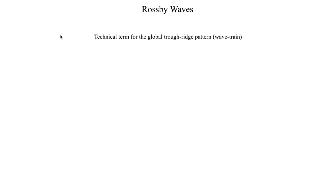There are multiple different categories of Rossby wave that we can look at, but here we're going to focus on the main two. So first, let's start off with the definition of a Rossby wave. This is usually a term that people will use to refer to the troughs and ridges that occur in the atmosphere, and a lot of times you'll also hear this referred to as the global wave train.